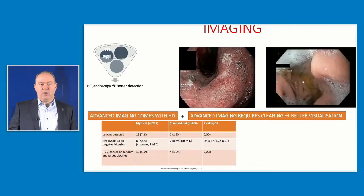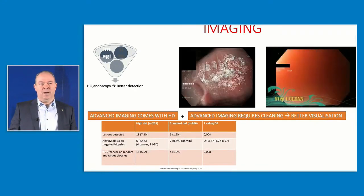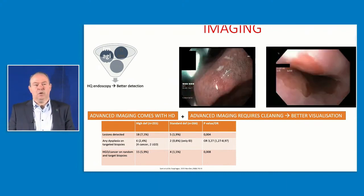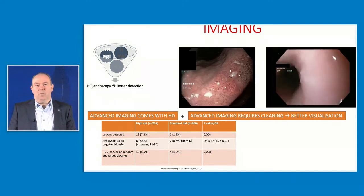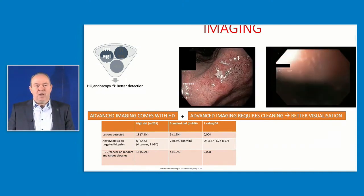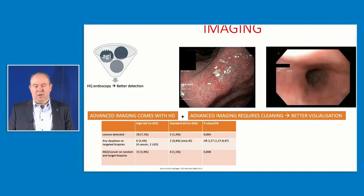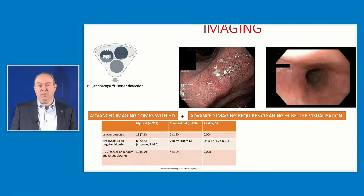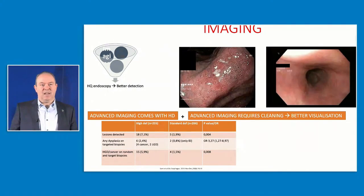There is a problem, and we can solve it by starting with excellent imaging. Advanced imaging is the key, but it must be emphasized that cleaning is necessary first — you will never pick up small lesions in Barrett's esophagus or at the cardia if you don't clean properly. The same applies to the stomach. Advanced imaging techniques come automatically with high-definition endoscopy, and a study from Nottingham shows that HD endoscopy is associated with better detection of lesions in Barrett's esophagus.